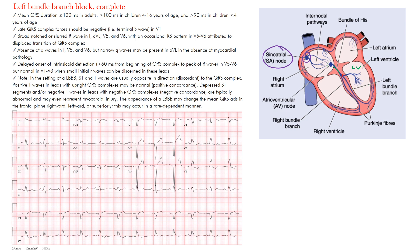Conduction comes down from the sinus node to the AV node, then approaches the bundle branches. As it reaches the left side, it is blocked, while the right side conducts normally. The right ventricle depolarizes first — that is Vector 1, going toward the right. Then, because the left bundle branch couldn't send impulses down, you have slow cell-to-cell depolarization that depolarizes the left ventricle from right to left — that is the second main vector.